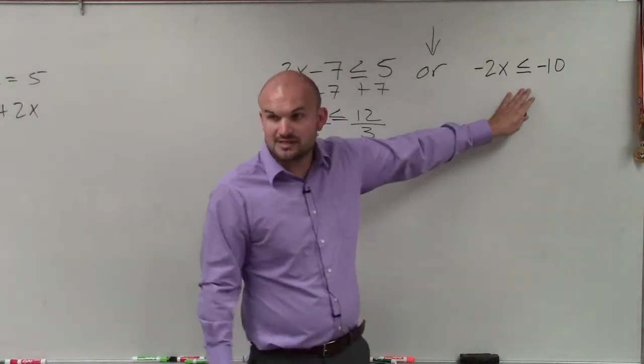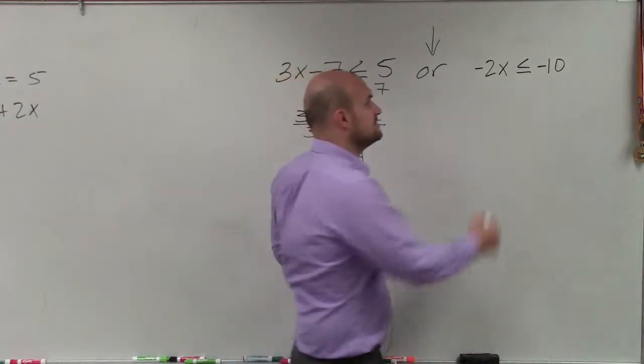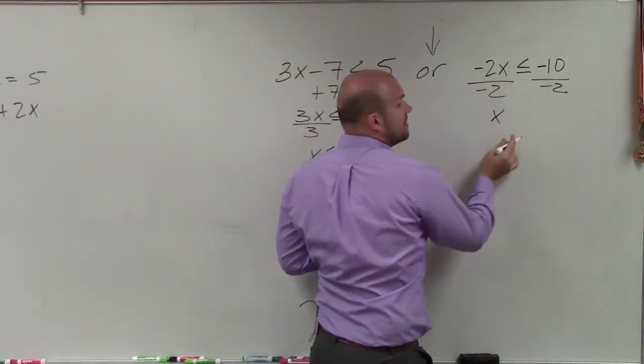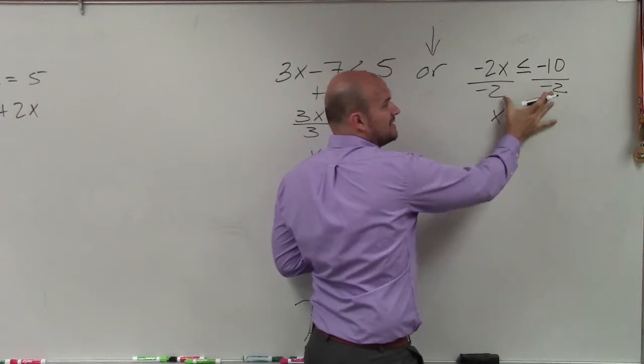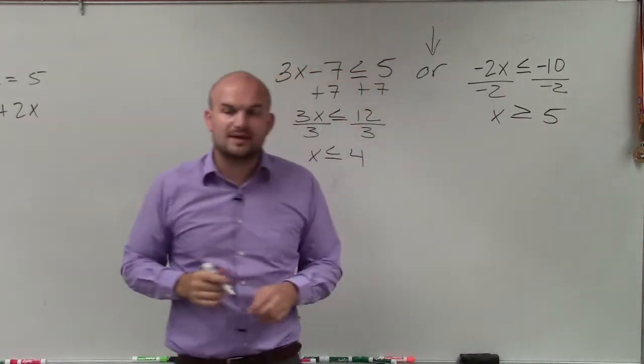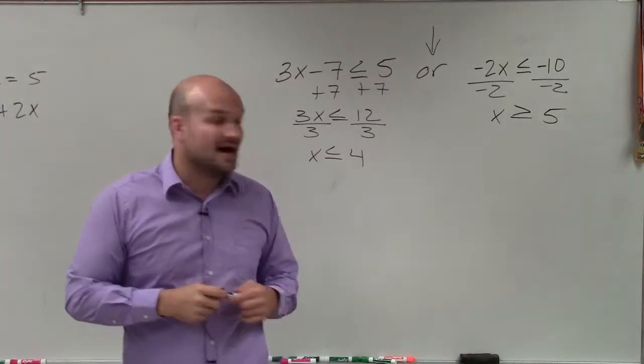Then over here, to solve this, all I need to do is divide by negative 2. So I divide by negative 2. And I have x. Remember, when you divide or multiply by a negative number, you have to flip the sign. A negative 10 divided by negative 2 is a positive 5.